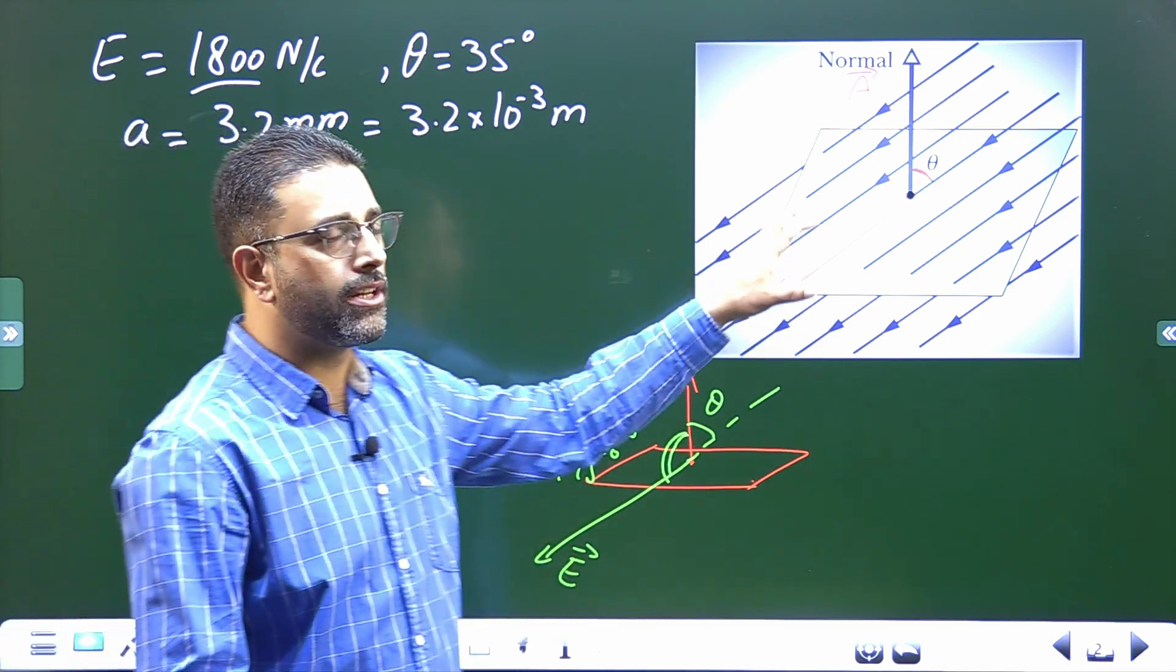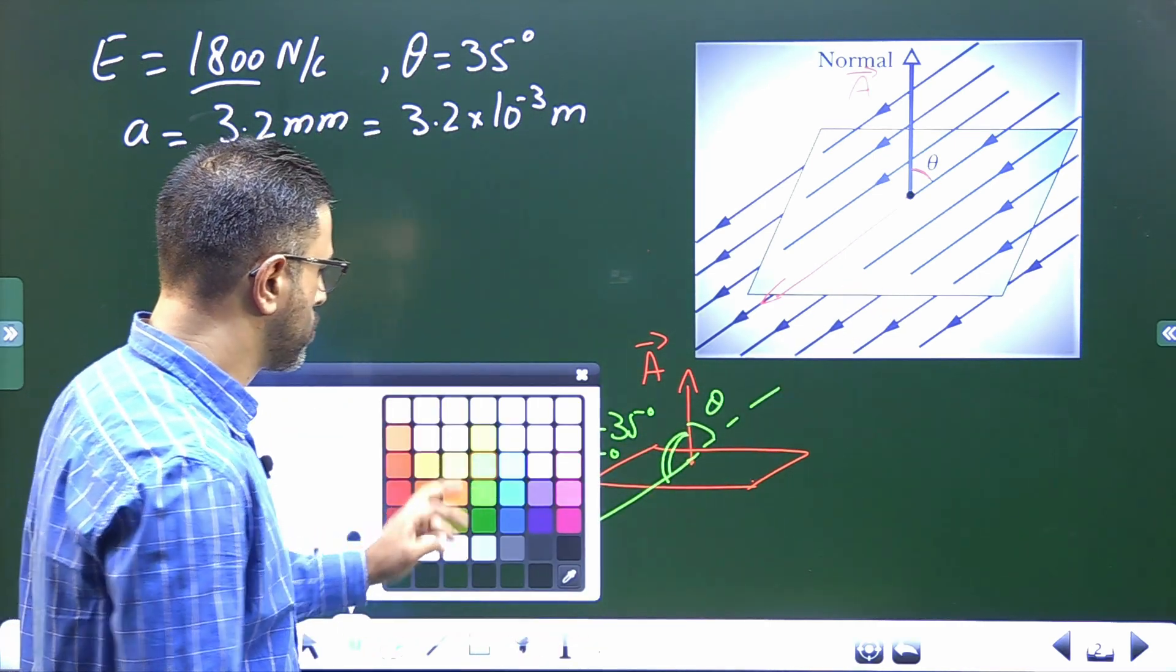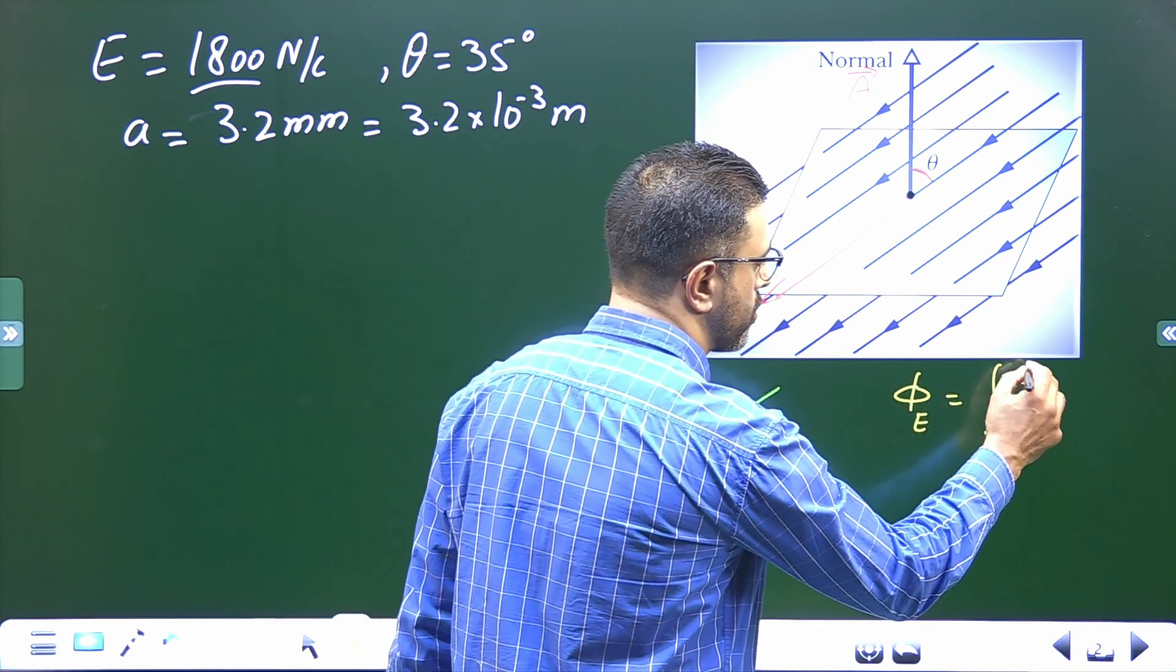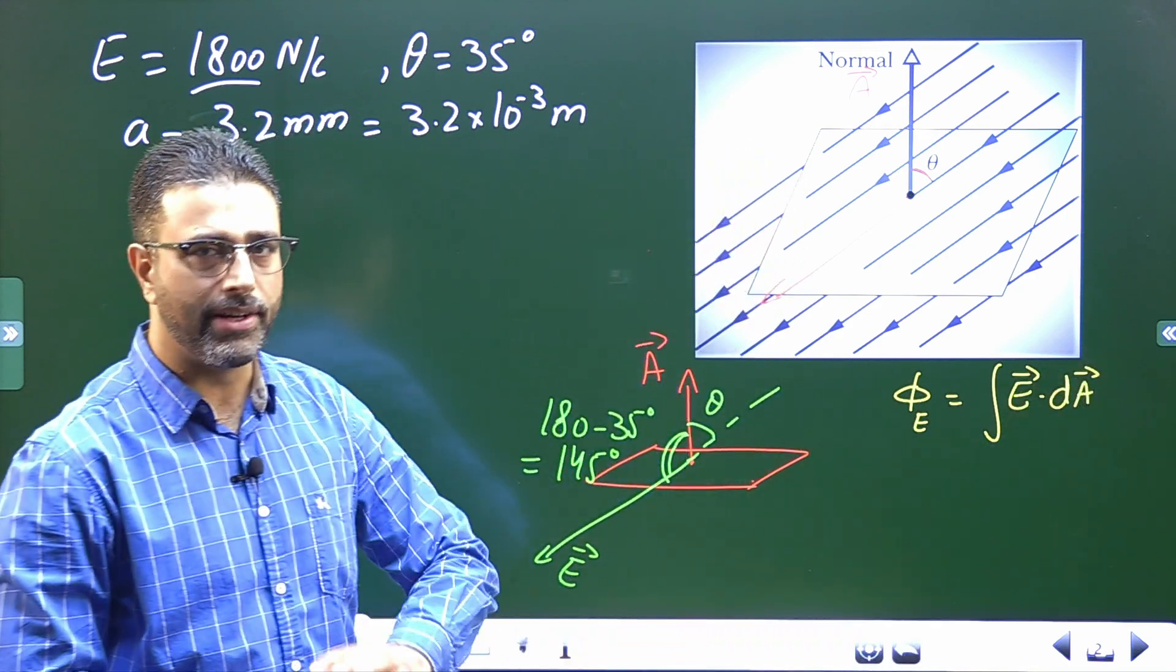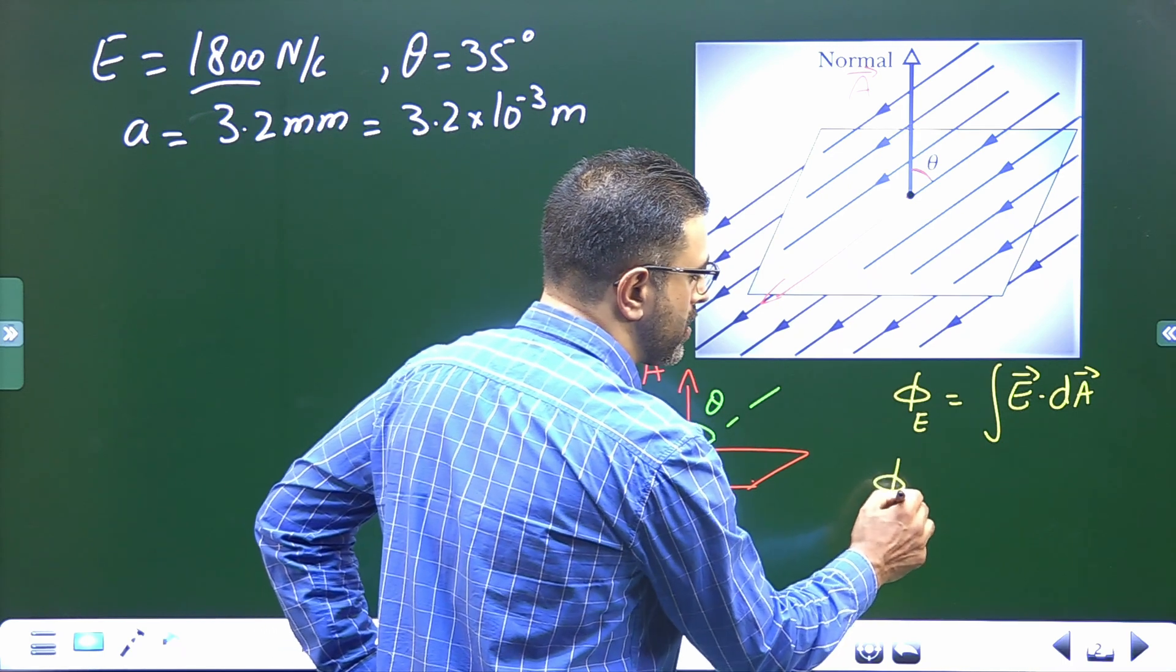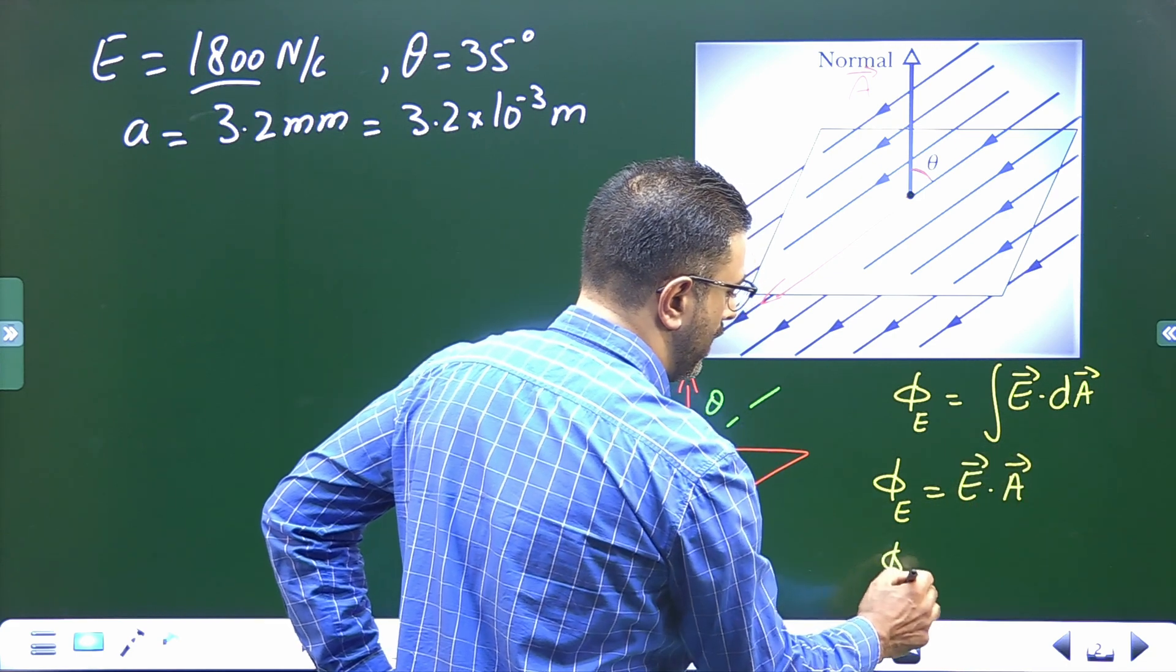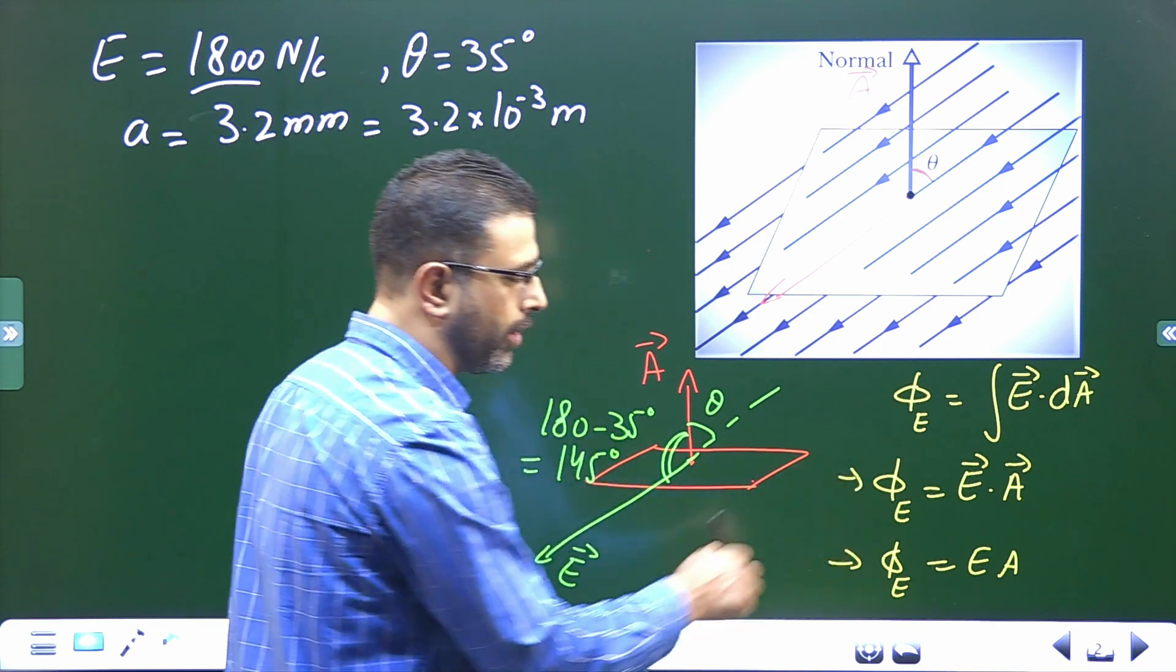Now, that electric field is uniform. Remember, we have talked about it earlier also. We have three equations for electric flux. The most general one is integration of E dot dA. This is the most general one, valid everywhere with no conditions applied. Then we have two special cases where electric flux is E dot A, or another one is simply E into A. But there are conditions for the validity of these equations.